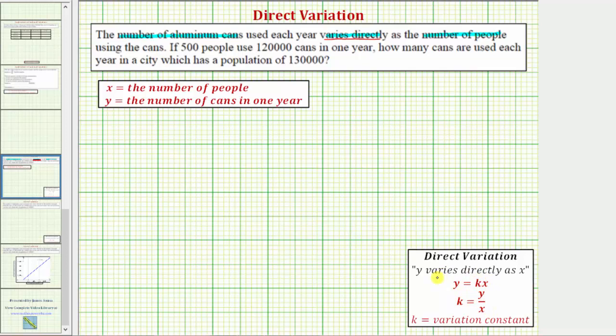Now this equation should look familiar. It resembles the slope-intercept form of linear equation with the form y equals mx plus b, except for direct variation b, the vertical intercept, is equal to zero. So if we were to graph y equals kx, the variation constant would be the slope of the line.